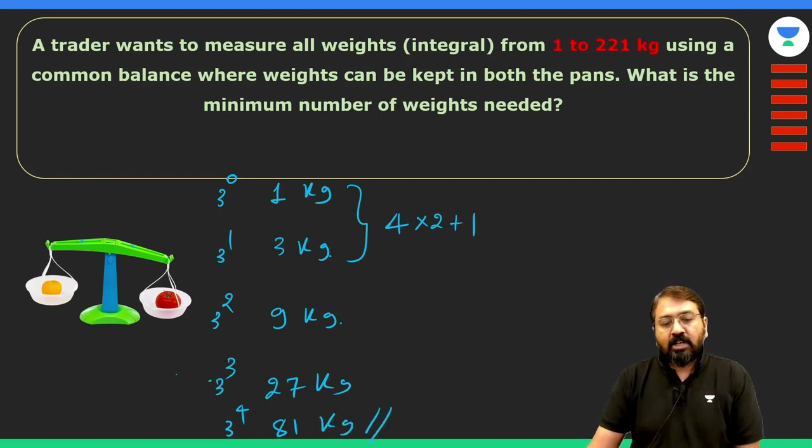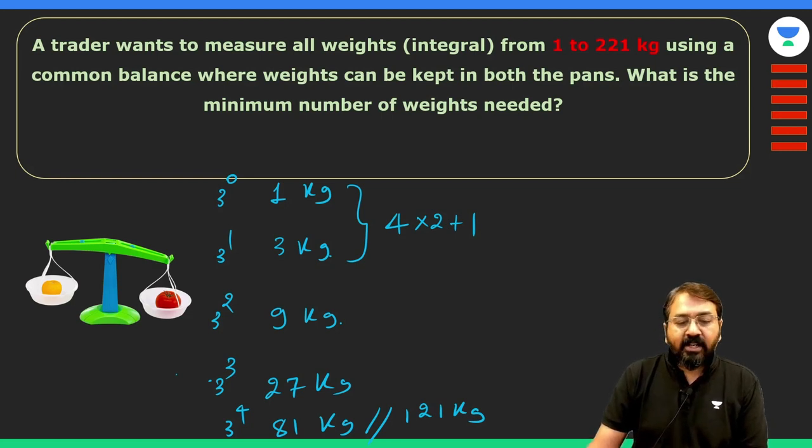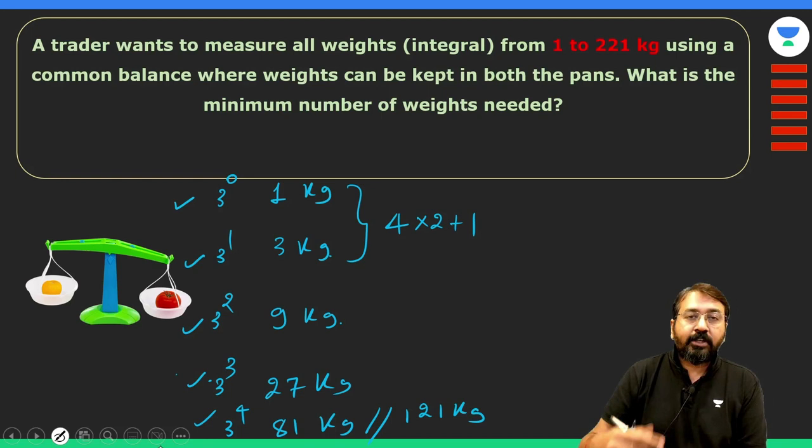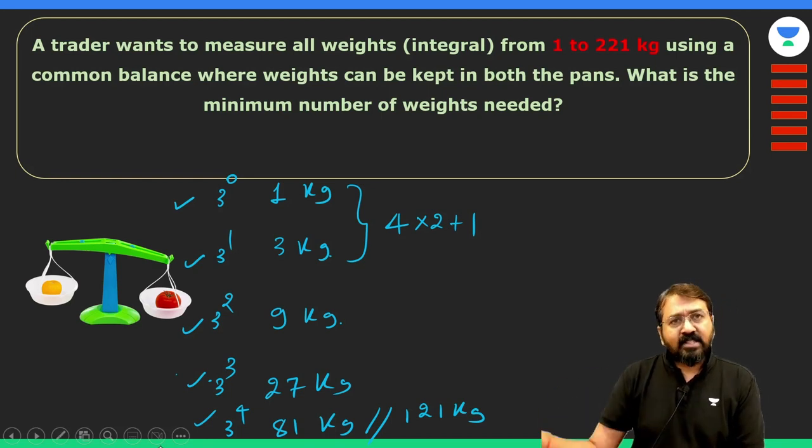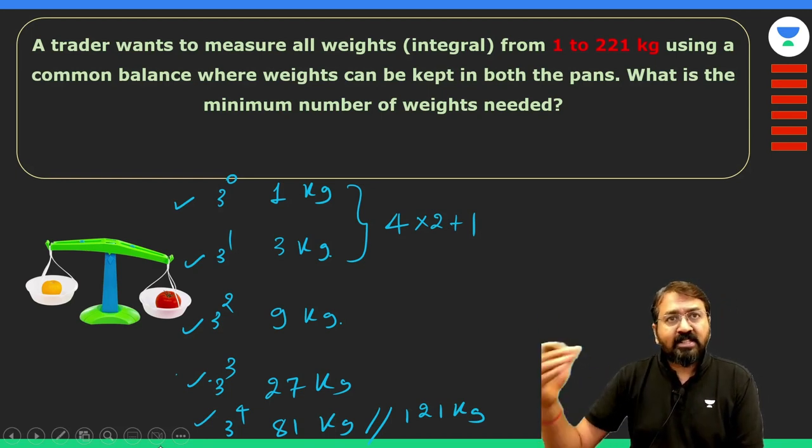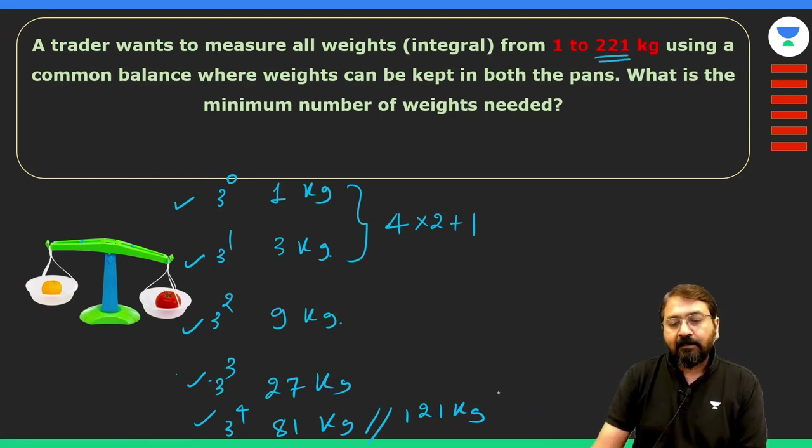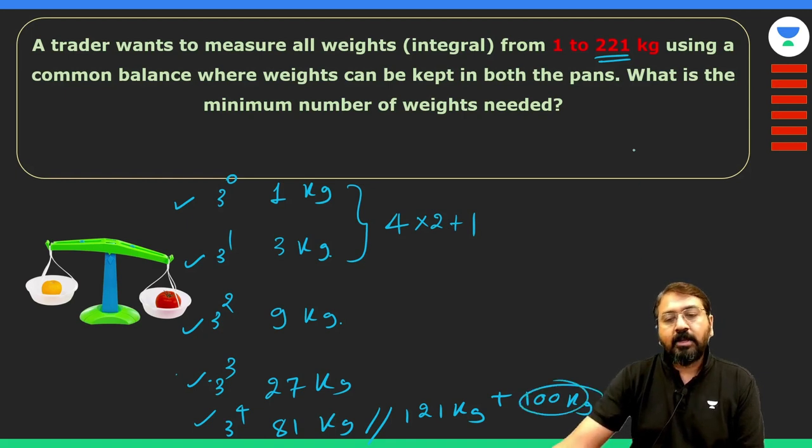Now if I observe this, the total will come out to be 121 kg, right? So my next weight, the 6th weight, because this is 1st, 2nd, 3rd, 4th, and 5th, we have already used 5 weights. The 6th weight can be of 243 kg, that is 3 raised to 5. Or since we just need to measure up to 221 kg, we can just take the remaining kg as our next weight. So this will be our 6th weight, and total weights required will be 6.